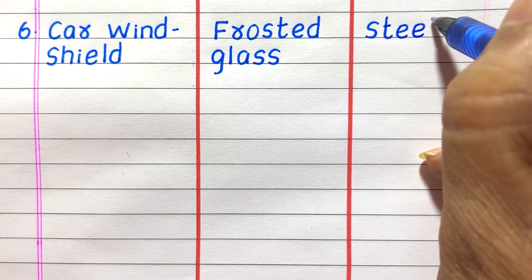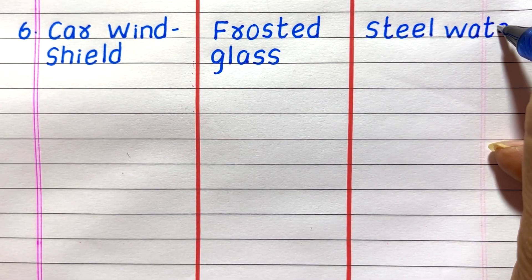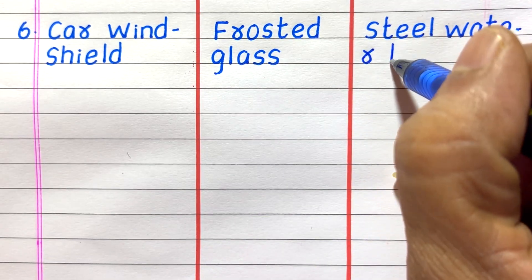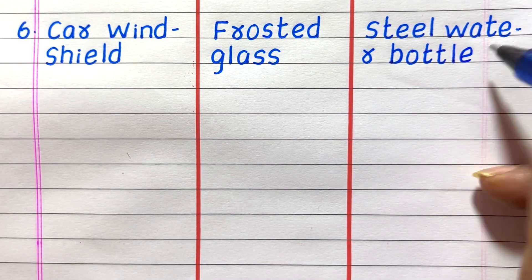Sixth example of a transparent object is car windshield, translucent frosted glass, opaque steel water bottle.